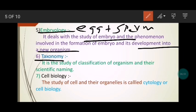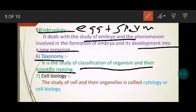The sixth branch is taxonomy. Taxo means classification and nom means naming. So taxonomy is the study of classification of organisms and their scientific naming. یعنی کہ organisms کو classify کرتے ہیں اور ان کو scientific names دیتے ہیں — جیسے کہ humans کو mammals کی category میں رکھا جاتا ہے۔